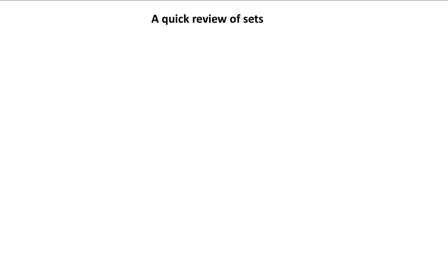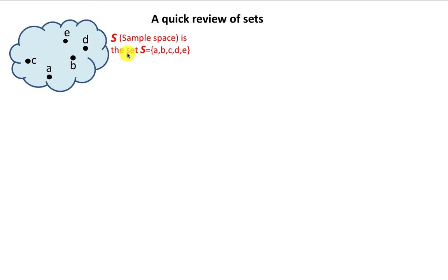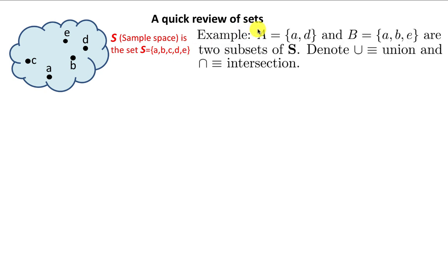At this point, it's necessary to do a quick review of sets. The sample space S is a collection or a set which is the set of all possible outcomes, labeled here as A, B, C, D, E, F, G, H, etc. In general, if you have a set A which has got elements A and D, and a set B which has got elements A, B, and E, these are called subsets of S. We then denote the union of two sets by the symbol ∪, and the intersection of two sets by the ∩ symbol.